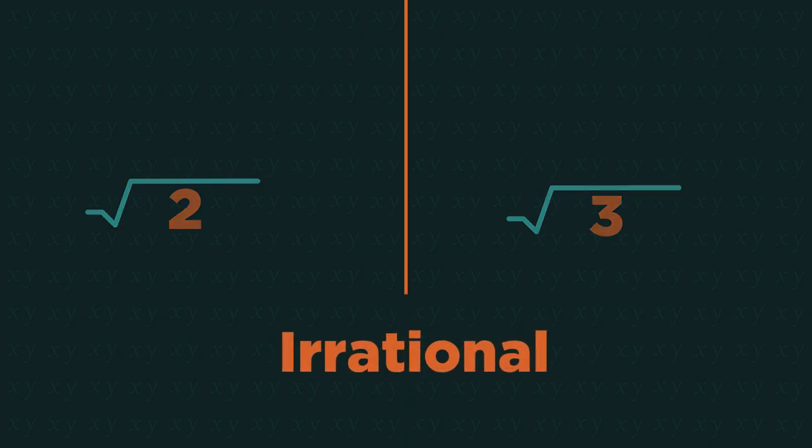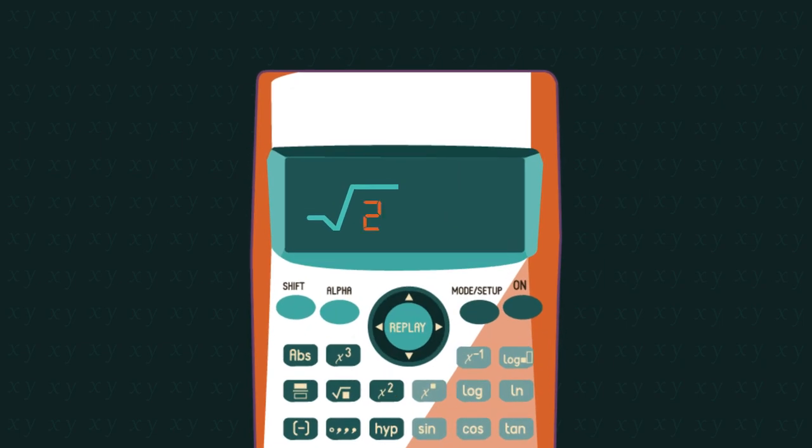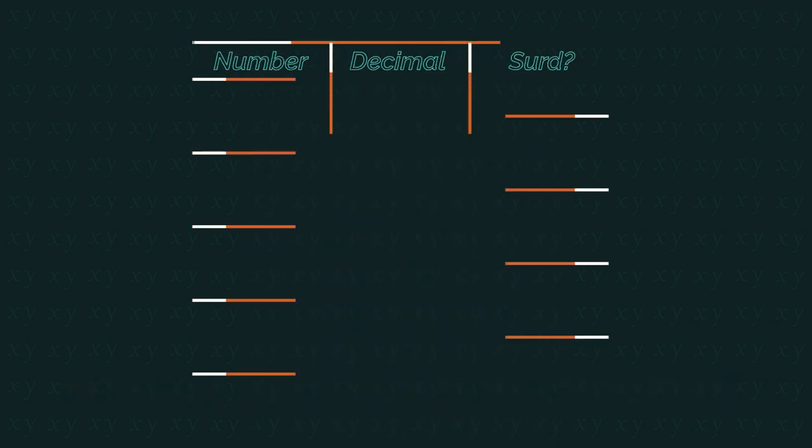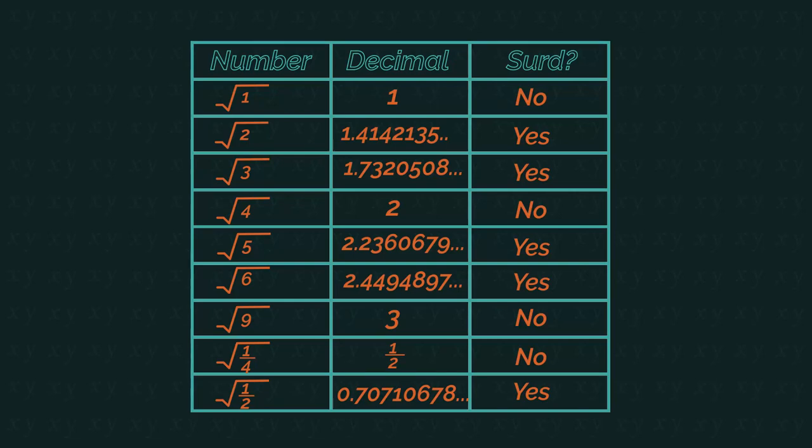Whereas, for example, square root 2 and square root 3 cannot be simplified. They are irrational. If you type them into your calculator, you get lots of decimal places that carry on forever. And the numbers cannot be written as fractions. So have a look at this table. See which are surds and which aren't.